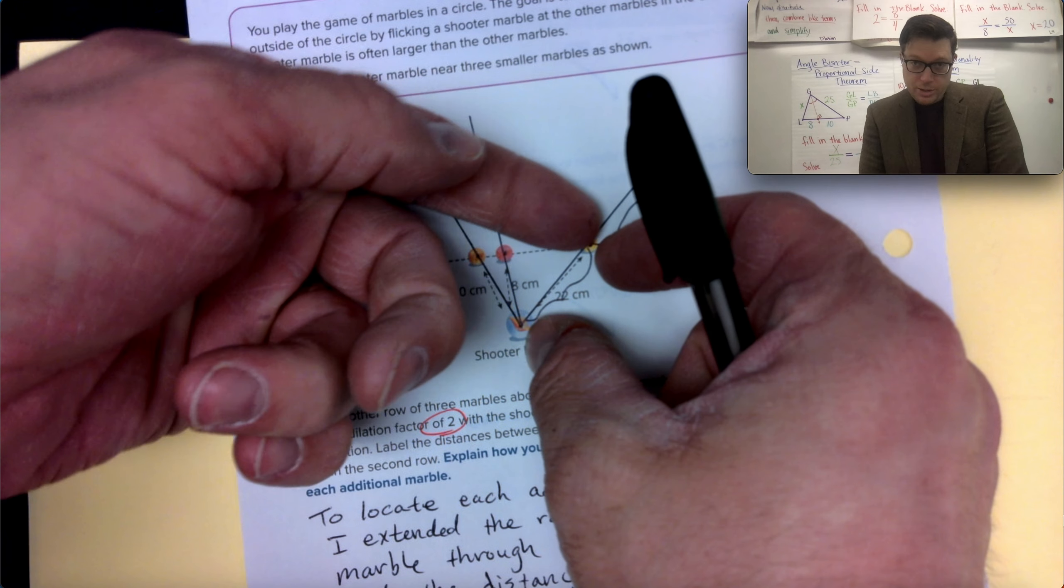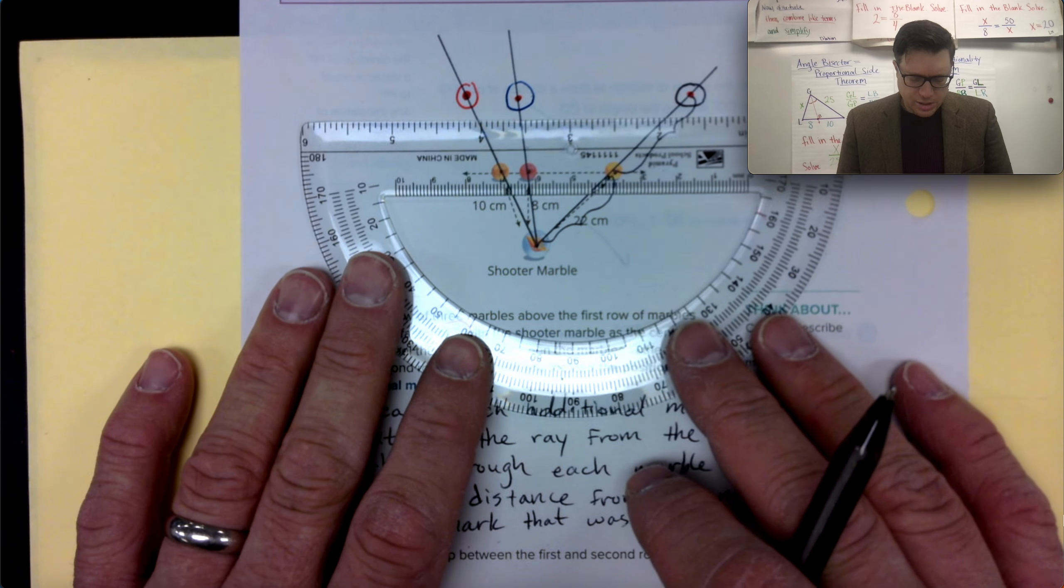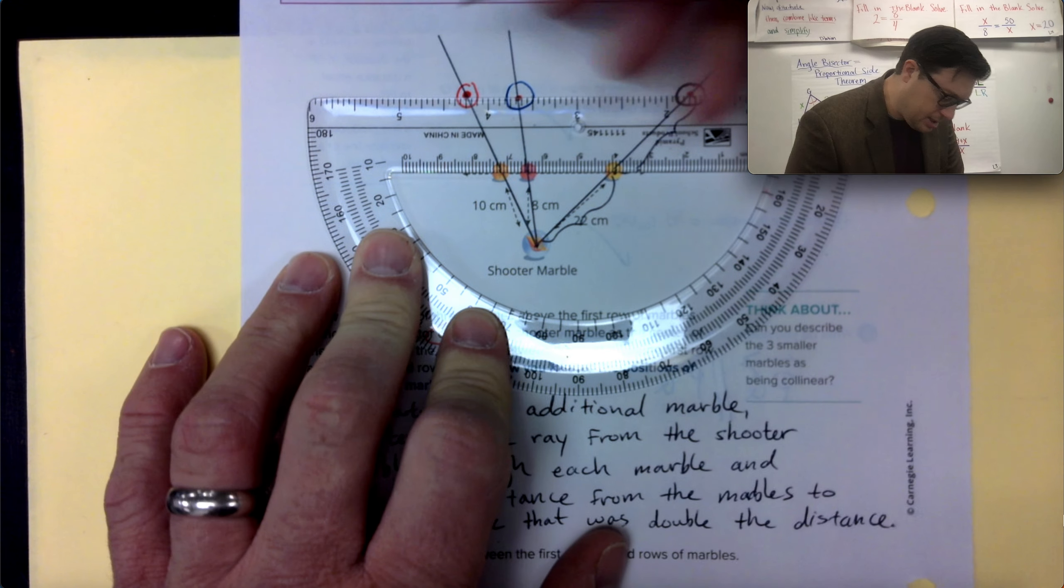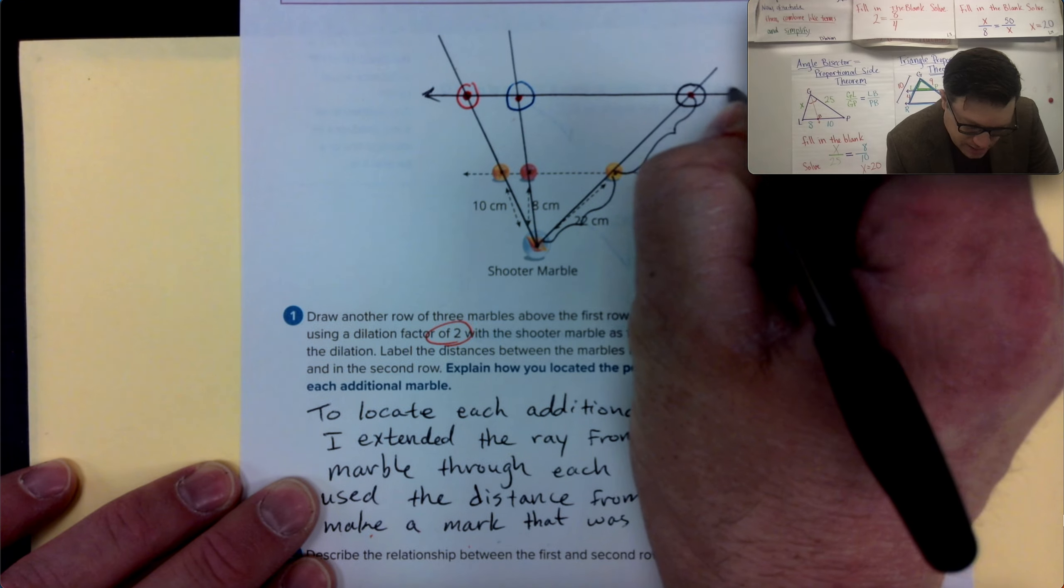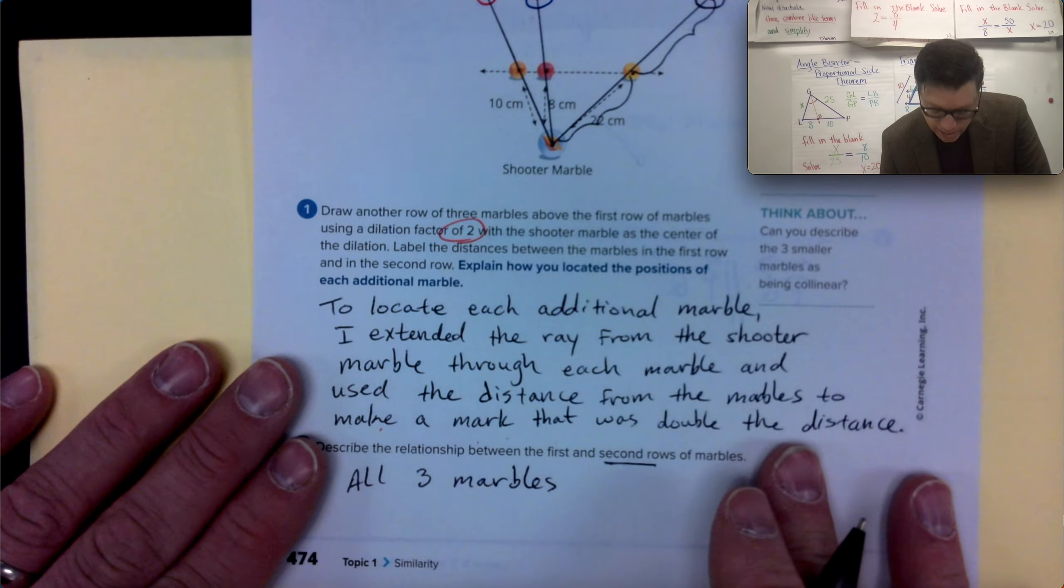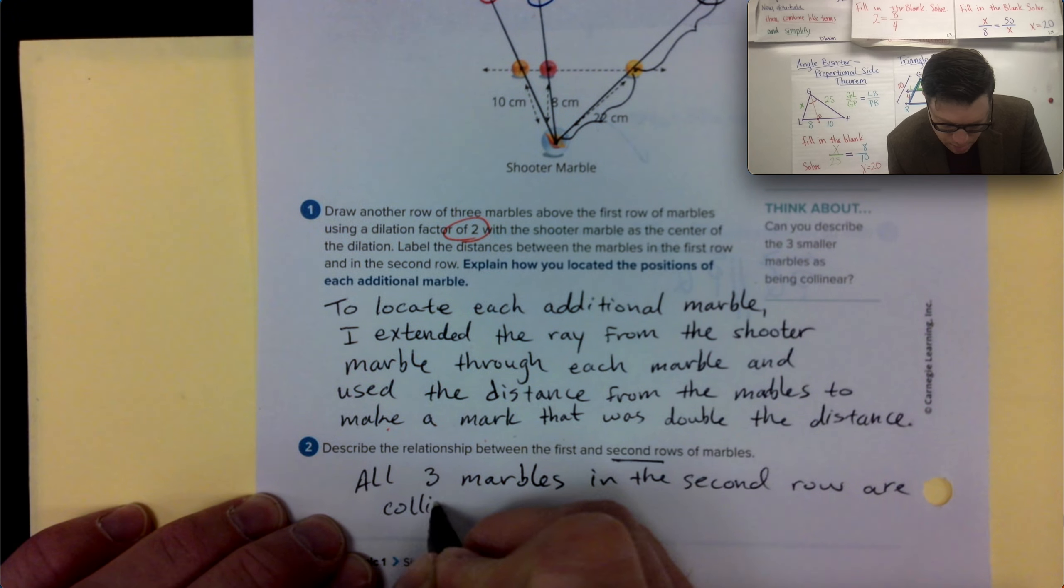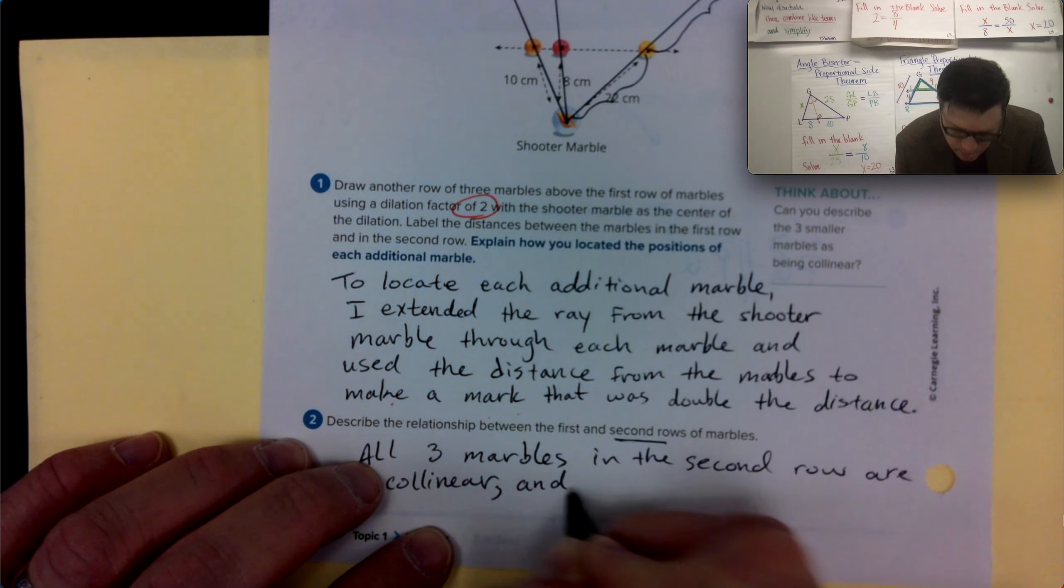Let's look at question two for a second. I'm trying to leave this diagram on there. Describe the relationship between the first and second rows of marbles. Well, the first row of marbles, they're all collinear, which means on a line, right? That's one of our vocabulary words. Collinear means on a line. And because of that extension and I tried to be careful as I traced the line, I believe, minus some minor error with my own ability to measure correctly, those three are also collinear. So I'm going to say that word, all three marbles in the second row are collinear. But there's another observation. So collinear and I'll put a comma and we're going to have a conjunctive sentence.